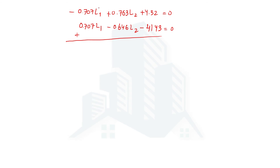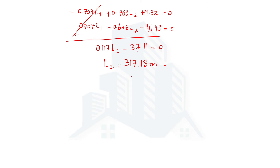Adding the two equations causes the L1 terms to cancel. We get a coefficient of 0.117·L2 minus 37.11 equals zero. Shifting 37.11 to the other side and dividing by 0.117, we get L2 = 317.18 meters — one of the answers. Substituting this value of L2 into either Equation 1 or Equation 2, we obtain the value of L1.